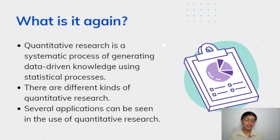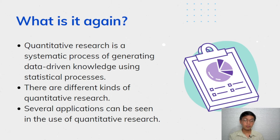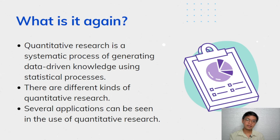But before that, let's try to recall the lesson that we previously learned. Quantitative research is a systematic process of generating empirical or data-driven knowledge using quantitative methods like statistics. We also learned that there are different kinds of quantitative research, and we tried our best to explain the four basic types of quantitative research.